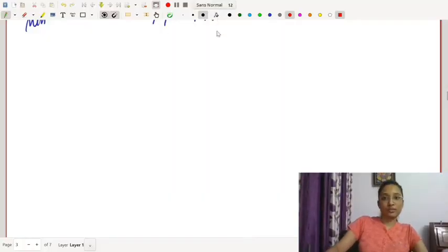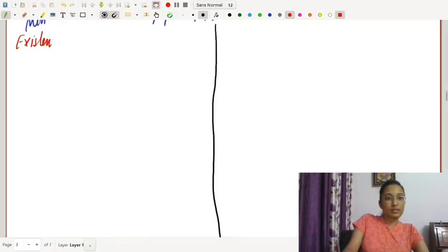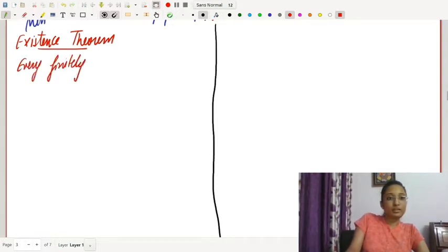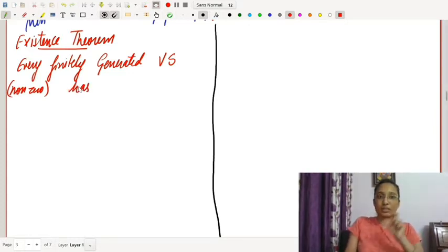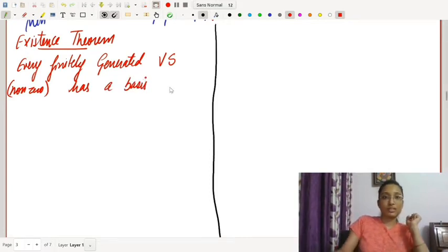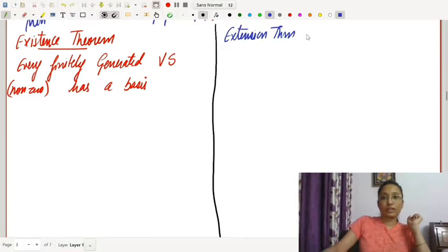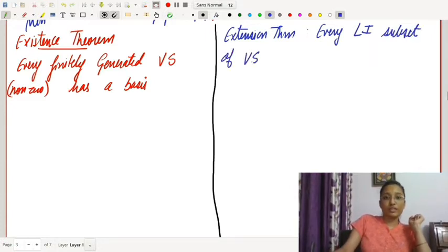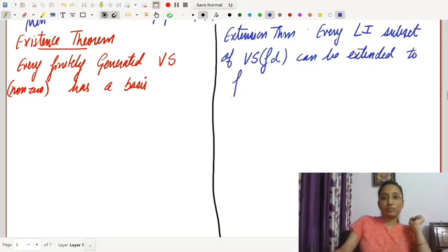First, the existence theorem states that for every finitely generated nonzero vector space, there exists a basis. Second, the extension theorem states that every linearly independent subset of a finitely dimensional vector space can be extended to form a basis.